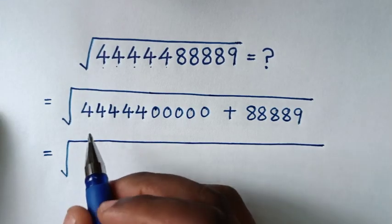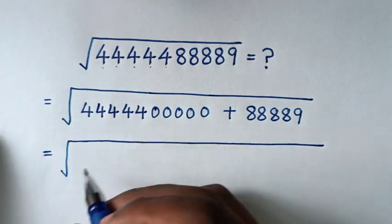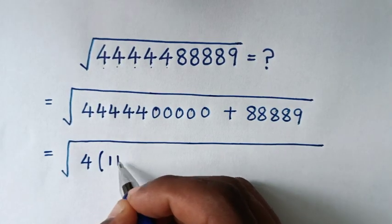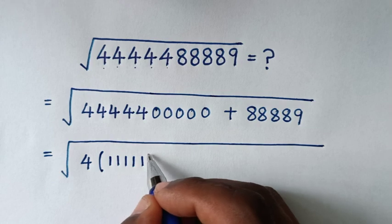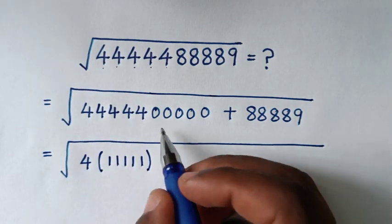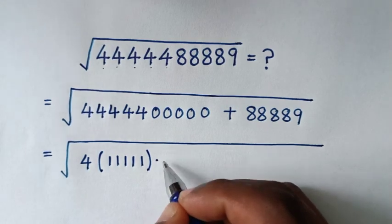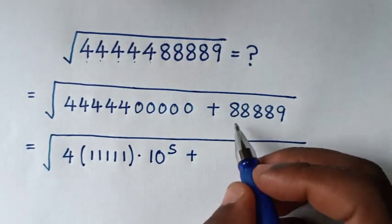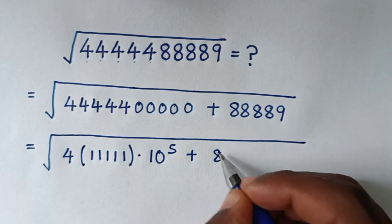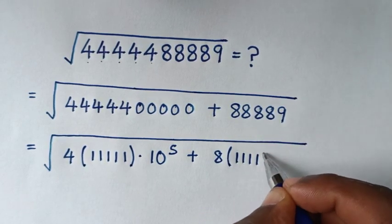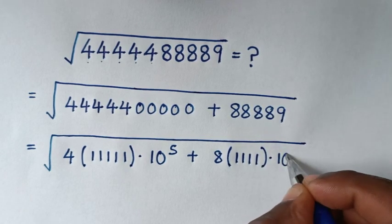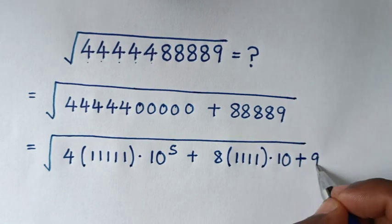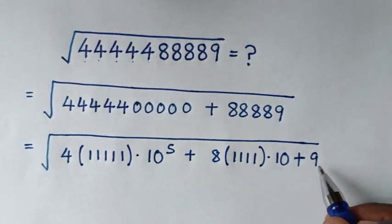In the next step, since we have five 4s, it will be 4 times the bracket (11111) — ones with five digits — then times 10 to the power of 5, then plus from here the 8s. So it will be 8 times (1111), then times 10, plus 9.